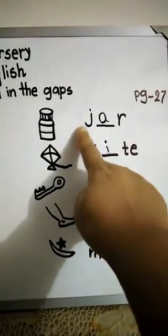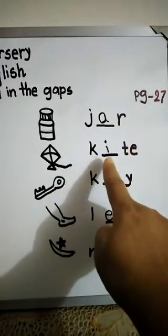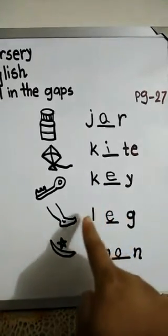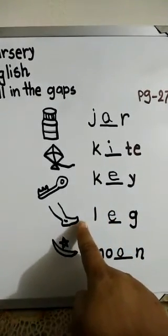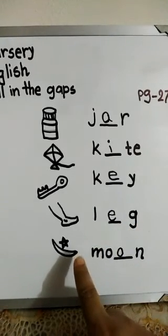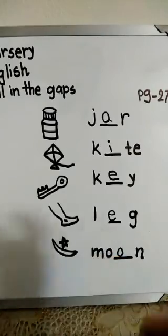Jar. J A R, jar. Then kite. K I T E, kite. K E Y, key. I draw here leg. L E G, leg. Last one, moon. M O O N, moon.